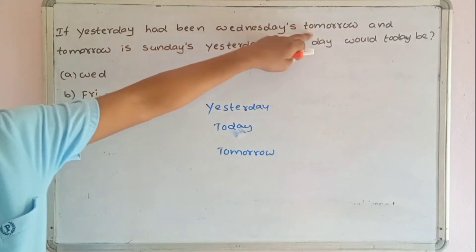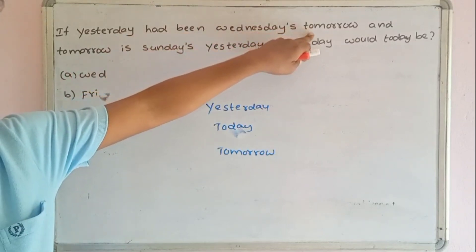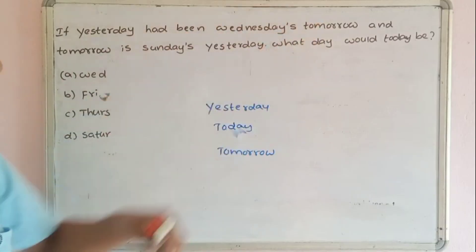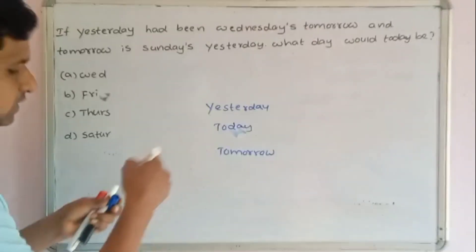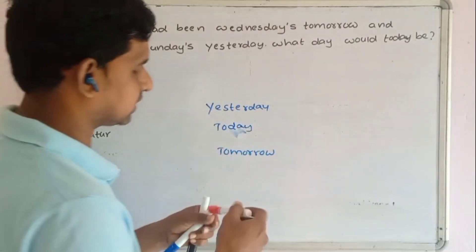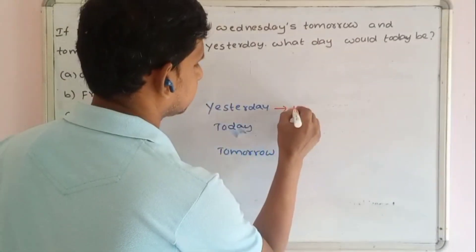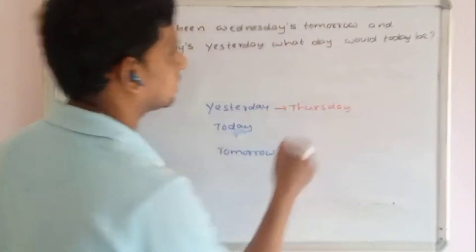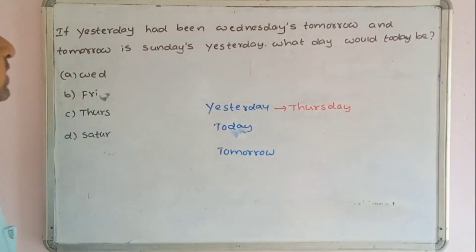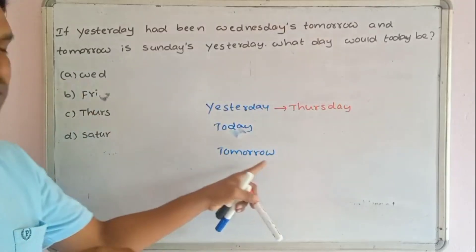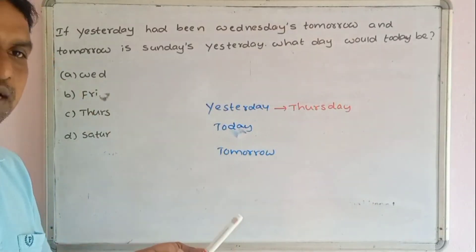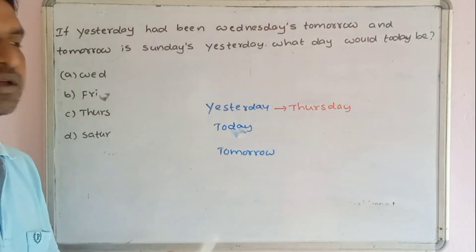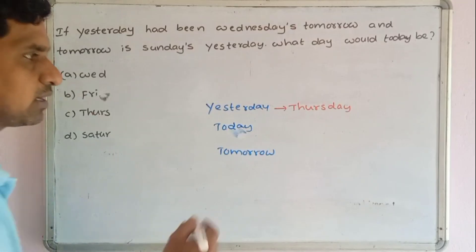Yesterday had been Wednesday's tomorrow — Wednesday's tomorrow means Thursday. So yesterday is Thursday. And tomorrow is Sunday, so yesterday relative to that is Saturday. Working through the days: if yesterday is Thursday and tomorrow is Sunday, today must be Friday.